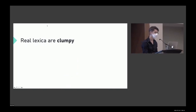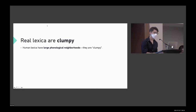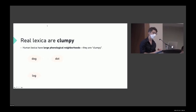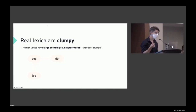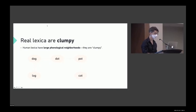One of the properties that people have identified is that real lexica are clumpy — they have large phonological neighborhoods. If we take a word like 'dog,' its neighbors are those that differ in exactly one phoneme, like 'dot' or 'log.' You can make a single edit to 'dog' to turn it into 'dot' or 'log,' and 'dot' can be turned into 'pot,' which can be turned into 'caught.' Human lexica in general are very dense in the neighborhoods they have.